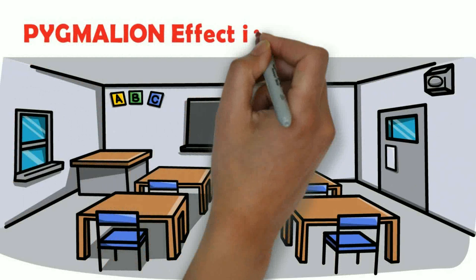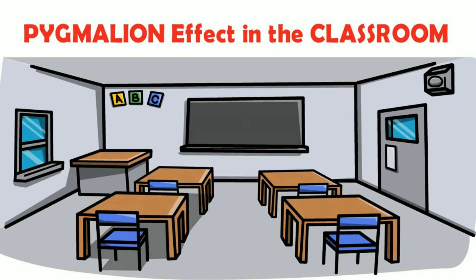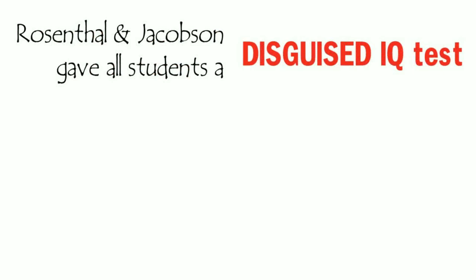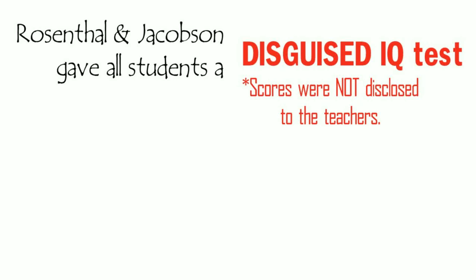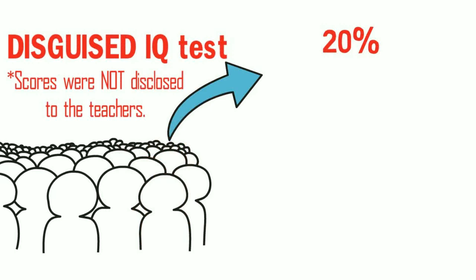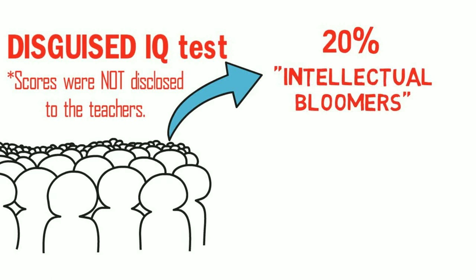The most famous application of the Pygmalion effect in the classroom — that is, in education — was the experiment conducted by Robert Rosenthal and Lenore Jacobson in a single California elementary school in the 1950s. In the experiment, Rosenthal and Jacobson gave all students a disguised IQ test at the beginning of the study, with the intention of not disclosing the scores to the teachers. They then told the teachers that, based on the results, certain children — about 20% of the school, chosen randomly — are intellectual bloomers and are expected to show great improvement in their intellectual competence, far better than any other students within a year.